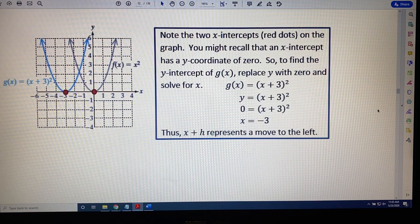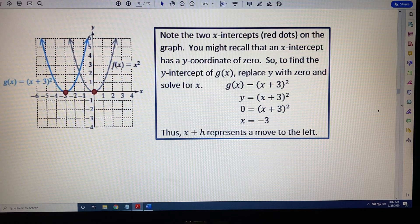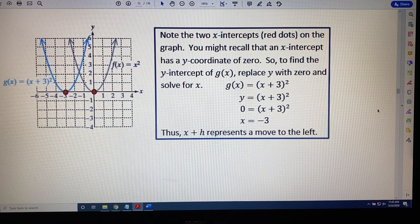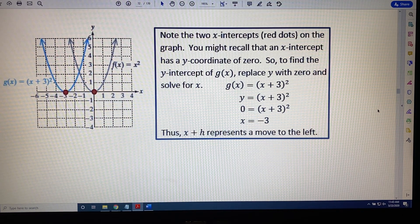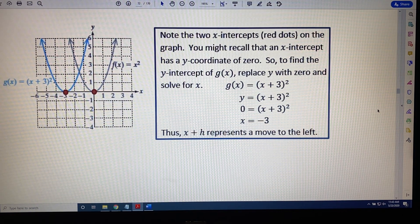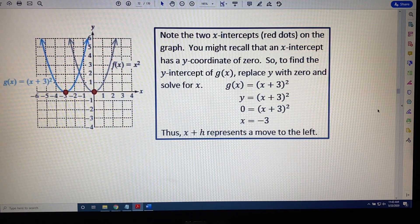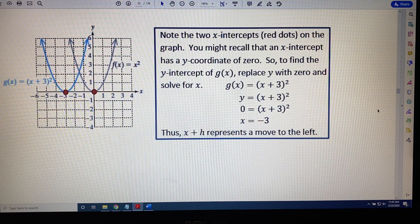It's backwards of what you would think. The best advice that I can give you when working with horizontal shifts is to simply remember that the equation part feels backwards of what you would expect, but the coordinates part feels perfectly normal for what you would expect.